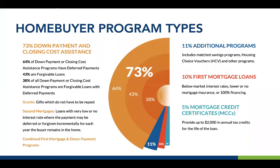When we say homeownership programs, there are over 2,200 across the country. 73% are some form of down payment and closing cost assistance — DPAs. Most programs we're talking about are, in fact, down payment assistance. Those can be grants, repayable second mortgages with an interest rate or zero percent interest paid monthly, and there are many different kinds including deferred payment programs.